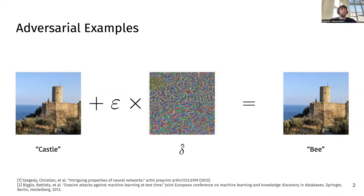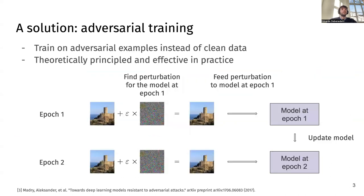This can potentially be a problem in security-sensitive applications. For this reason, the research community has developed several solutions. One of them is adversarial training. Adversarial training, from a work by Madri et al. from 2017, consists of training on adversarial examples instead of clean data. At every iteration, we take the data and, instead of feeding it directly to the model, we first find an adversarial perturbation, add it to our original image, feed it to the model, and then update the model using standard techniques such as SGD.